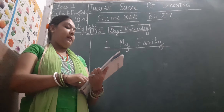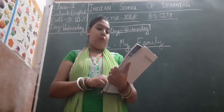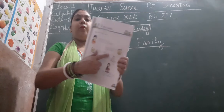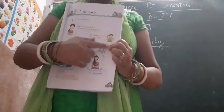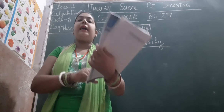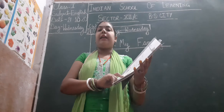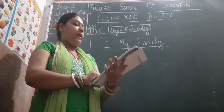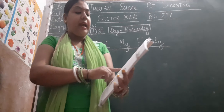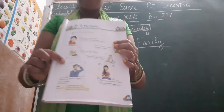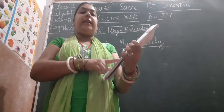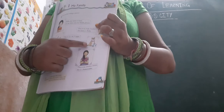This is my baby brother. His name is Bobo. Ye mera chhota bhai hai. Iska naam hai Bobo — aapke book mein aise chhote bacche ki picture di hui hogi bachon, jo Ania ka bhai hai. Next, this is my cat Kapi. Ye meri billi hai aur iska naam hai Kapi. Next, this is my dog Dikki. Ye mera dog Dikki hai.